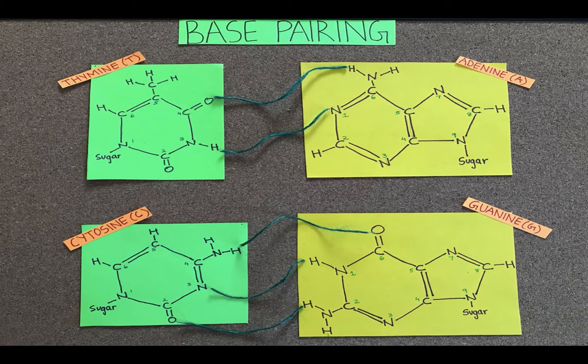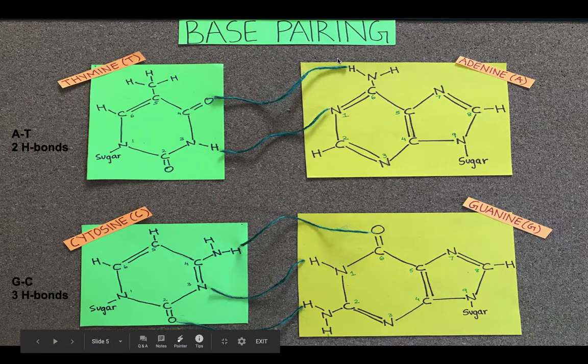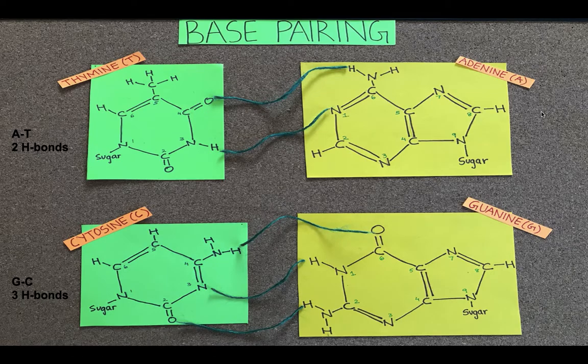In the DNA helix, adenine pairs with thymine using two hydrogen bonds, while guanine pairs with cytosine using three hydrogen bonds. As you can see, the partially positive hydrogen is attracted to the partially negative oxygen or nitrogen in a hydrogen bond.